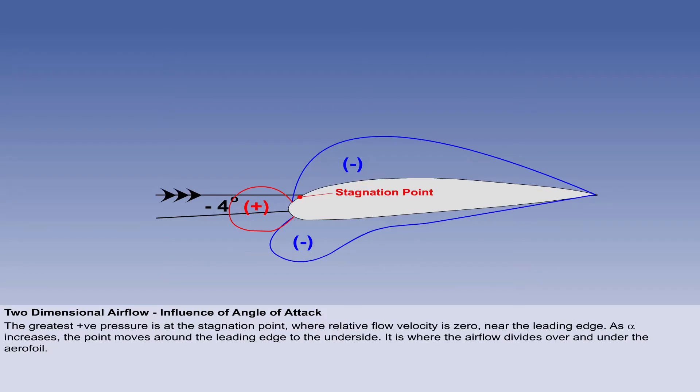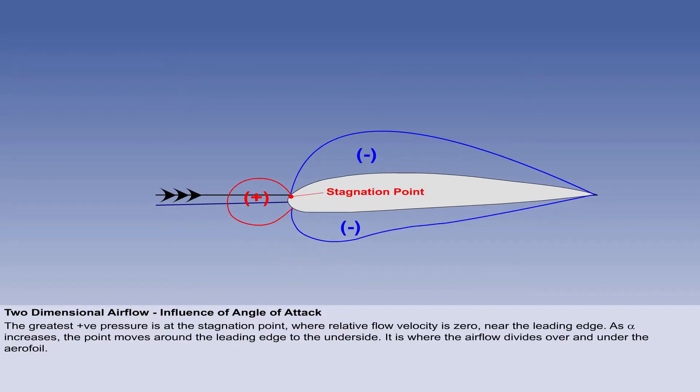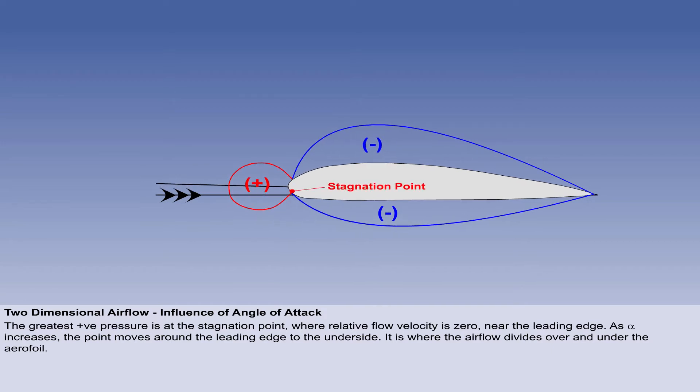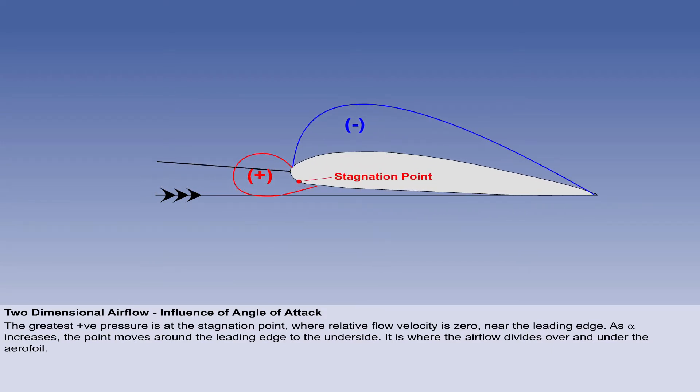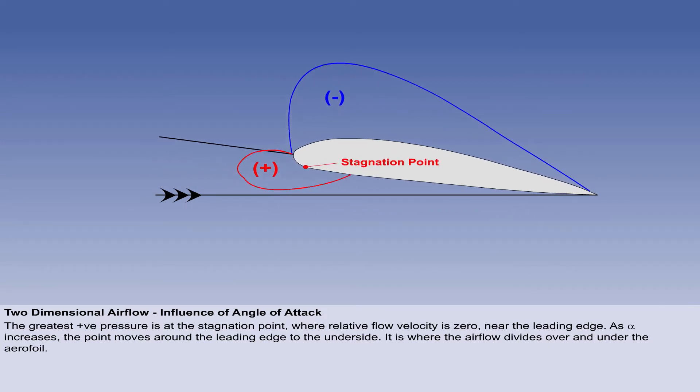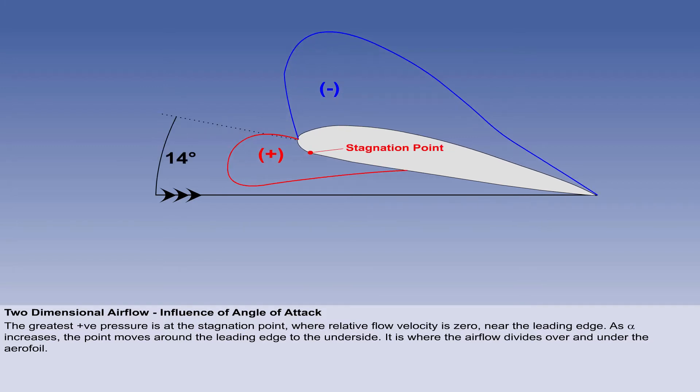The greatest positive pressure occurs at the stagnation point, where the relative flow velocity is zero. This point is somewhere near the leading edge. As the alpha increases from minus 4, it moves from the upper surface around the leading edge to the lower surface.